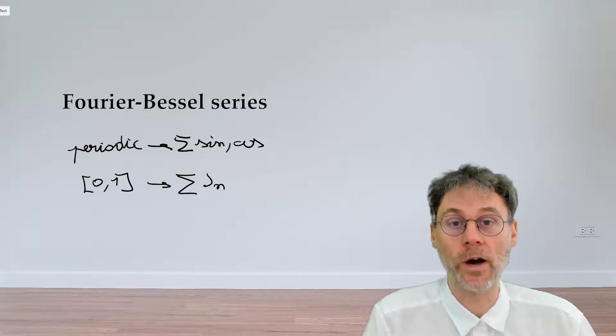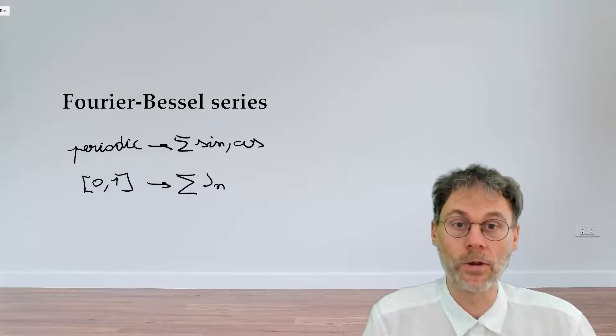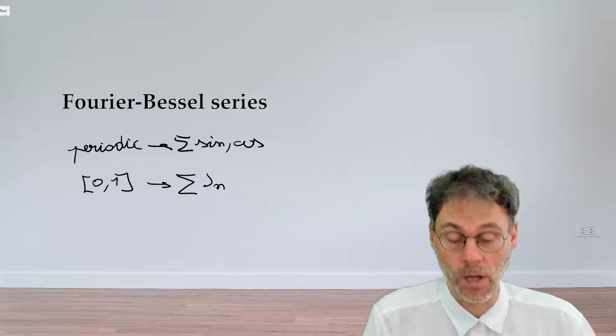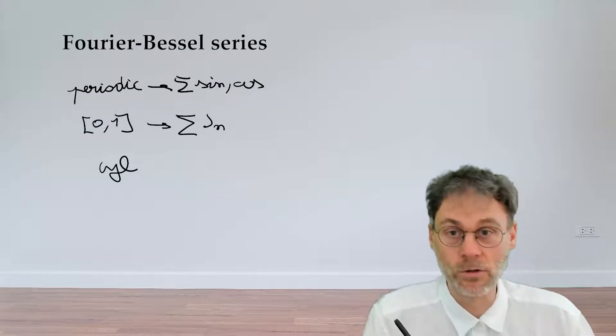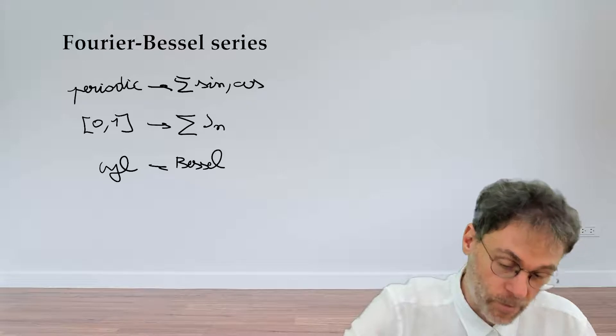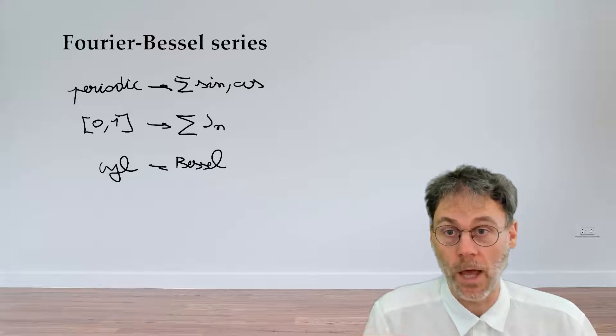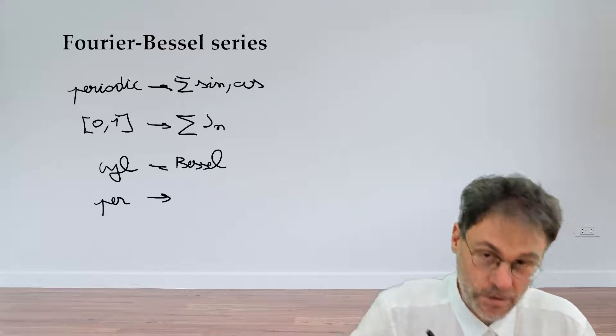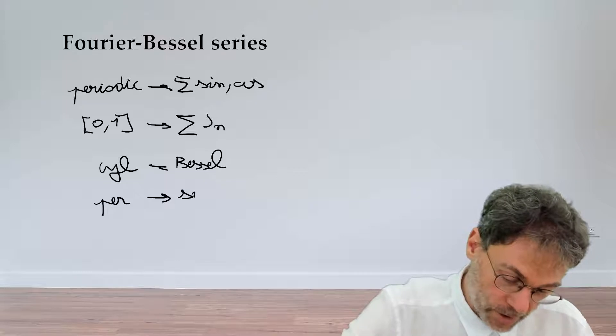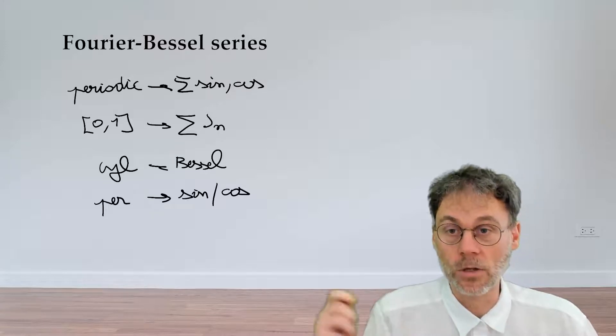A good choice would be to find some basis functions which already incorporate some of the physics of the problem. Then intuitively you could hope that this is a smart choice of basis functions and then you get better precision, better convergence. If you're dealing, for example, with a problem that involves cylindrical coordinates, we know that the natural ally of cylindrical coordinates is Bessel functions. So then you might consider trying to use Bessel functions as a basis set to expand a certain function. If on the other hand you're dealing with periodic functions, then the physics of the problem tells you there's something periodic going on, and therefore your best friends are sine and cosine functions. And then in that way you can hope to get much faster convergence.